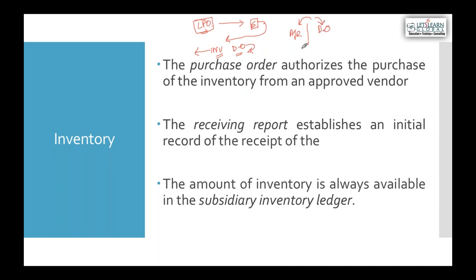Our company receives two documents in two different places: the DO is received by the warehouse supervisor, who is responsible for receiving and storing inventory. The invoice is submitted to the accounts payable section in the office. The accounts payable clerk updates the record for the value of goods received and amount due to the supplier.